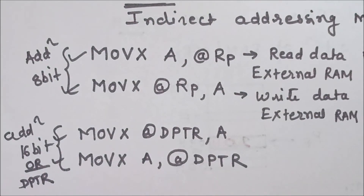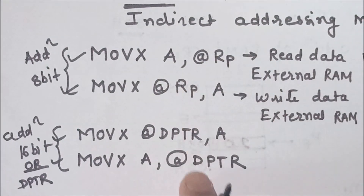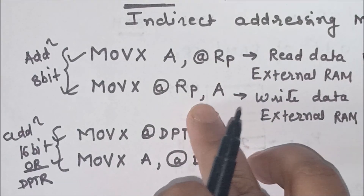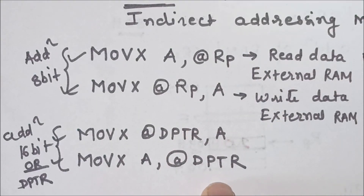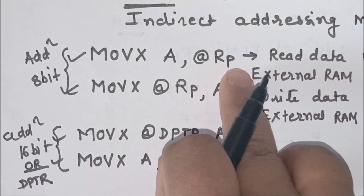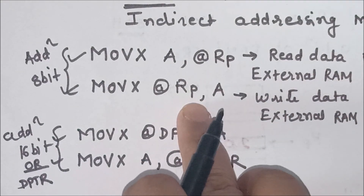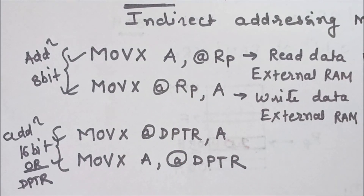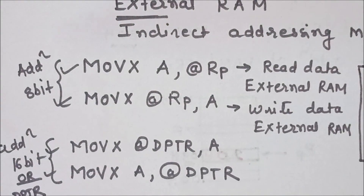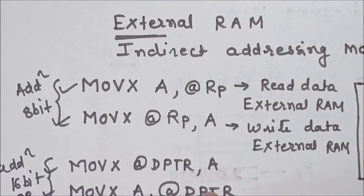Only these four instructions are available for external RAM: read data from external RAM and write data to external RAM. You can use three registers as pointer registers — R0, R1, or DPTR. Generally, if the address of external RAM is 8-bit, use R0 or R1. If it is 16-bit, then use the DPTR register. So we can use this indirect addressing mode for external RAM.